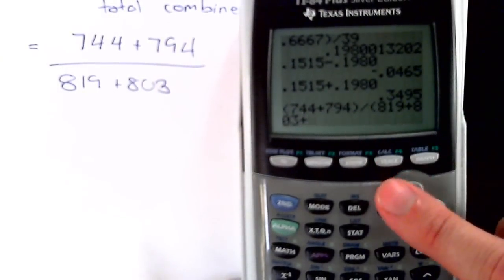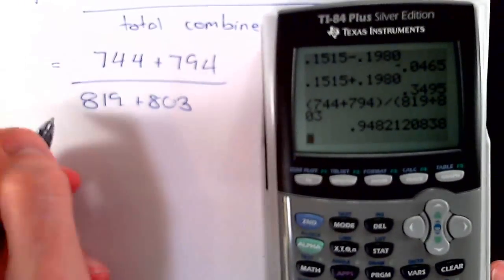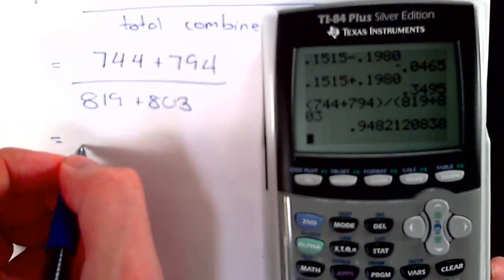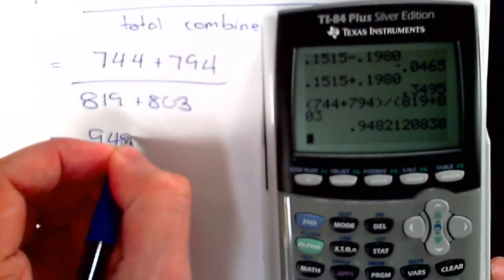Parentheses around the numerator, parentheses around the denominator, and we get a pooled sample proportion of 0.9482.